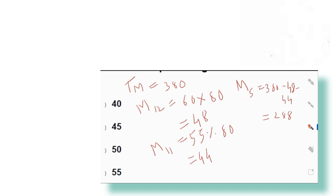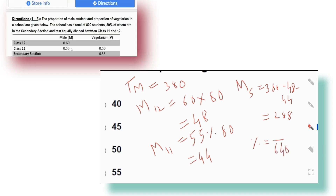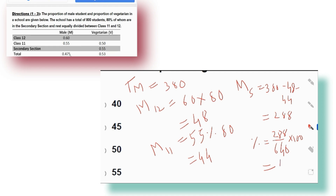Total male students in secondary section is 288. Total students in secondary section = 640. Percentage of male students in secondary section = (288 ÷ 640) × 100 = 45%.